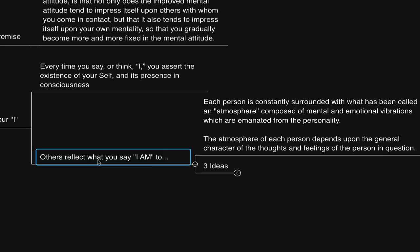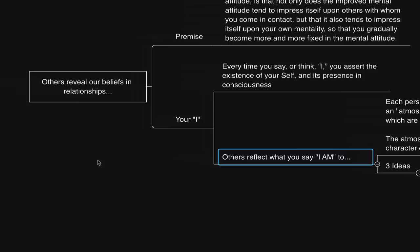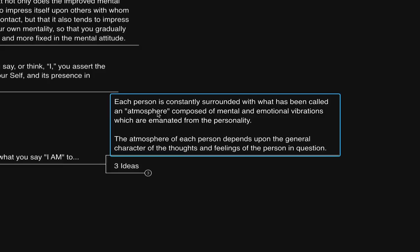And so we're taught that the outer world is consciousness reflected. As in the outer is playing out as he says here: Each person is constantly surrounded with what has been called an atmosphere. These are the effects, the experiences with others, the energy, the vibe. Those are the effects of the attributes that we identify with, that which we say I am to.